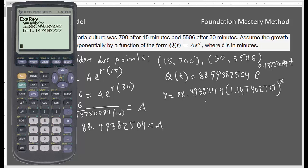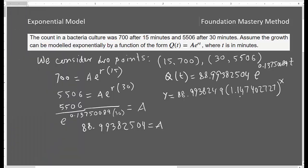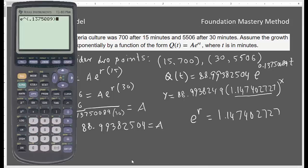As you can see, the model looks like 88.9938249 and then 1.147402727^x. So the first part, A, matches almost up to certain decimal places. And this one now here, if you see, this number is actually this whole thing e^r. See here, 1.1474. See, very close. So we got this one.